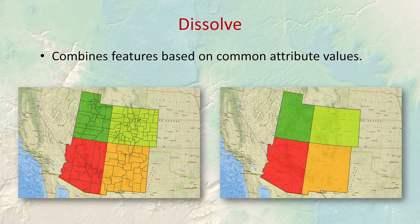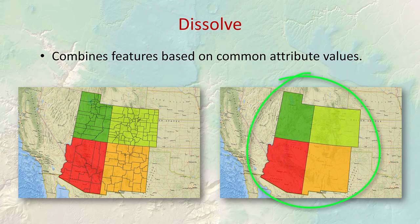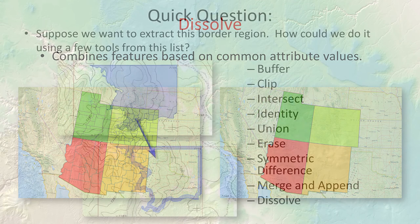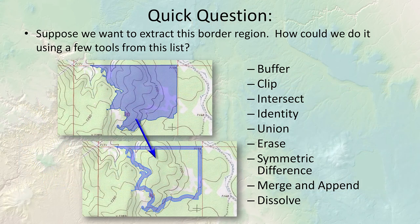The dissolve tool is a very popular tool that combines geometric objects into a single larger object. You can dissolve all features in a feature class into one, dissolve a selection of features, or dissolve based on common attribute values. For example, dissolving a county map by state attribute produces state polygons — as shown here with the four-corner states.